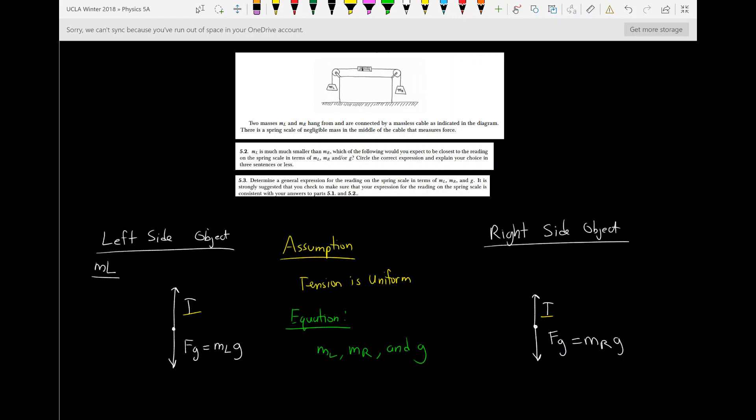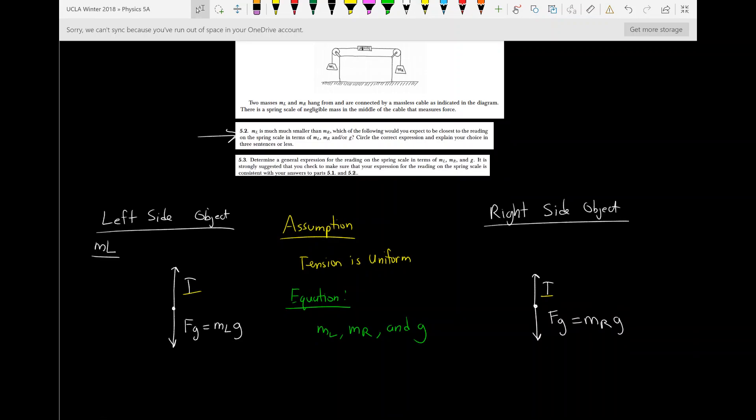Okay, so let's start off answering number 5.2 first. So 5.2 is saying ML is much smaller than MR, which of the following would you expect to be closest to the reading on the spring scale in terms of ML, MR, and or G? Okay, so in this problem, by the way, 5.2 and 5.3 are kind of asking the same question.